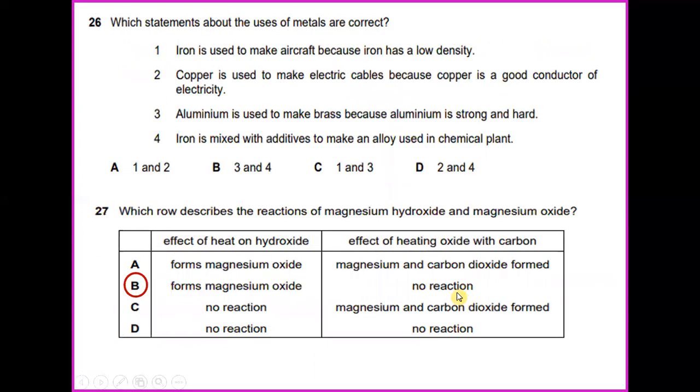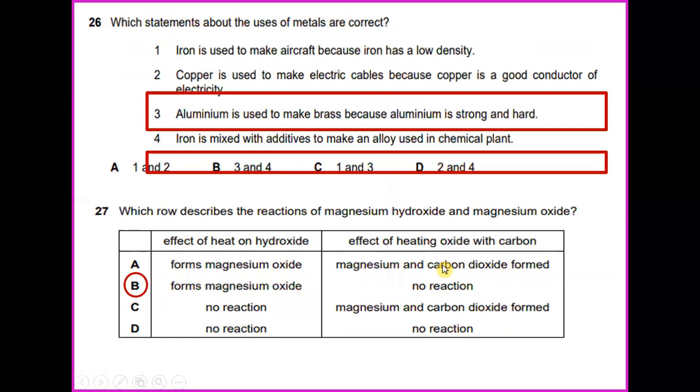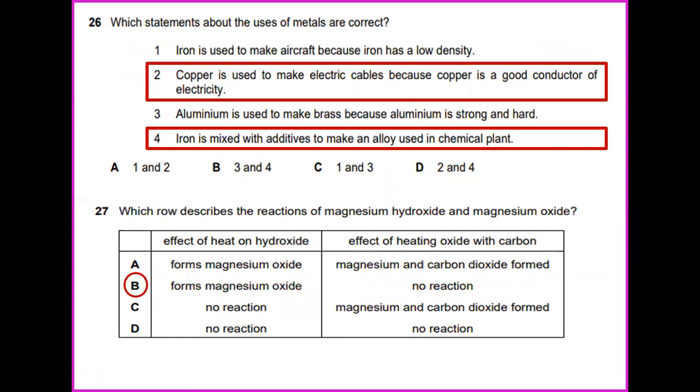Which statement about the use of metals are correct? Copper is used to make electric cables because copper is a good conductor of electricity. And aluminum is used to make brass because aluminum is strong and hard. And iron is mixed with additives to make an alloy because it's used in chemical plants. So the answer will be 2 and 4.